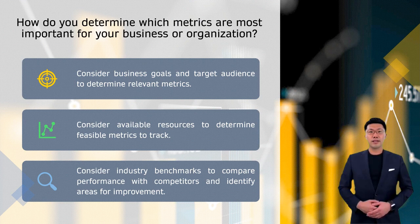The second factor is resources. Consider what resources you have available to track and measure your content marketing metrics and which metrics will be feasible to track given your resources. The third factor is your industry. Research industry benchmarks and consider which metrics are commonly used in your industry. This will help you understand how your content marketing efforts compare to your competitors and identify areas for improvement.